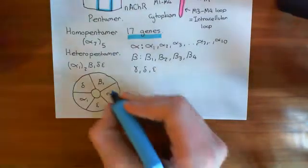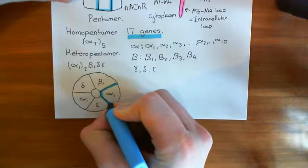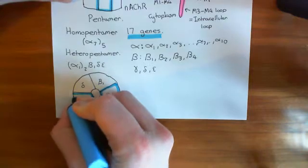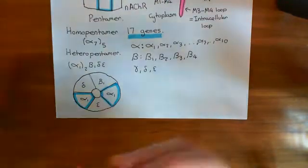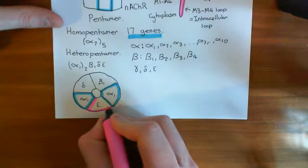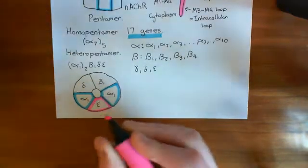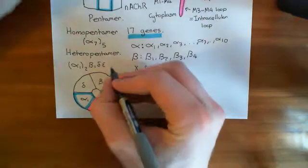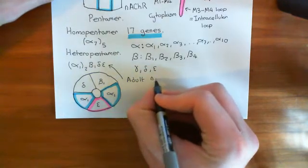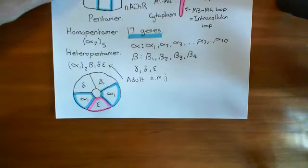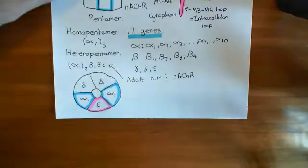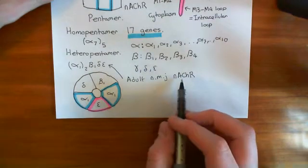Let's add some colour to make it look more interesting. The two alpha-1 subunits are in blue, and they are split apart by the epsilon subunit. The epsilon subunit is what you use in the adult neuromuscular junction nicotinic acetylcholine receptors — this is the adult form of the NMJ nAChR.